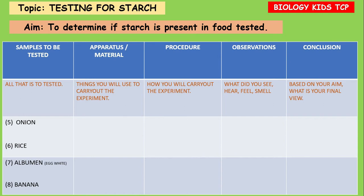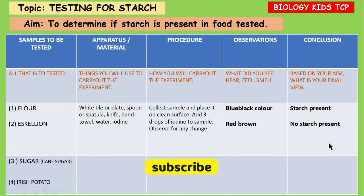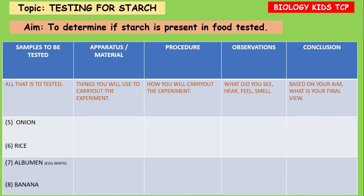Remember, you're supposed to pause the video to complete the activities. We're going to be testing onion, rice, banana, and egg albumin — albumin is the white part of the egg. Your teacher will guide you as to whether you should fill certain areas in. We started out with flour, escallion, sugar, and potato, then moved on to onion, rice, egg albumin, and banana. We completed the first two food samples for you as a guide to what is expected. Ensure the table is properly written in your textbooks.